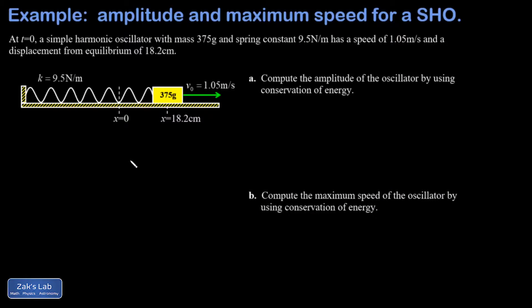In this video we're looking at a simple harmonic oscillator. We're told that at t equals zero, this oscillator has a speed of 1.05 meters per second and a displacement from equilibrium of 18.2 centimeters.